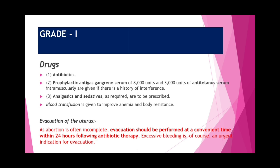Grade 1 treatment: antibiotics, prophylactic antigas gangrene serum 8,000 units and anti-tetanus serum 3,000 units intramuscularly if there is history of instrumentation. Analgesia and sedatives if required. Blood transfusion to improve anemia and body resistance. Evacuation of the uterus should be performed within 24 hours following antibiotic therapy, as abortion is often incomplete.